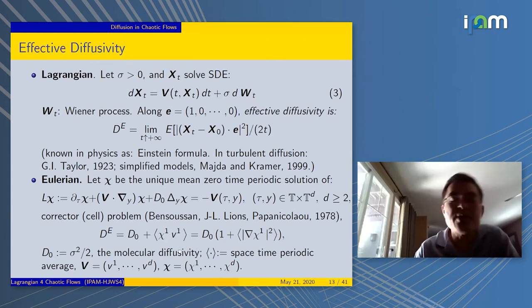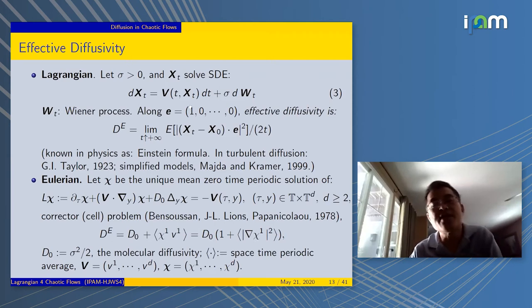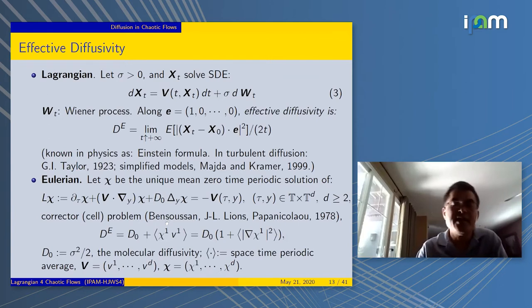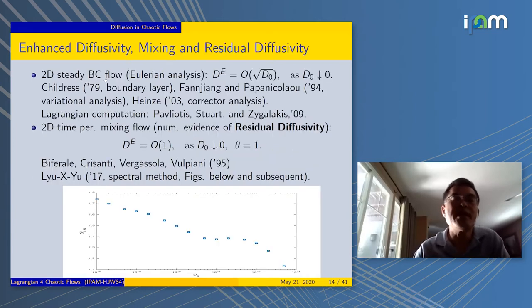In the second approach, you solve PDEs. You don't deal with all this statistic stuff. It looks pretty nice. In fact, more can be done from analysis. Let's go back to the flow. In the 2D steady flow, the D_E scales like square root of D_0. As D_0 goes to zero, you get enhancement.